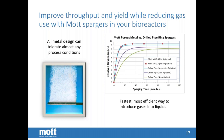Your gas to liquid transfer efficiency is much higher with the porous metal. The graph on the right shows that the porous metal sparger, with or without agitation, they're pretty much on top of each other, and it also gives you the best gas to liquid transfer efficiency. When you get to a drill pipe with no agitation, you can see it takes a lot longer to get up to, in this case, the dissolved oxygen level of 8, and it's difficult with a drill pipe to get much higher than 8.